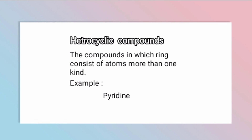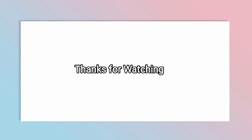Heterocyclic compounds are compounds in which the ring consists of atoms of more than one kind — that is, the ring contains atoms other than carbon, such as nitrogen or oxygen. An example of a heterocyclic compound is pyridine.